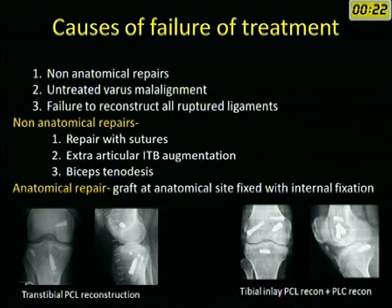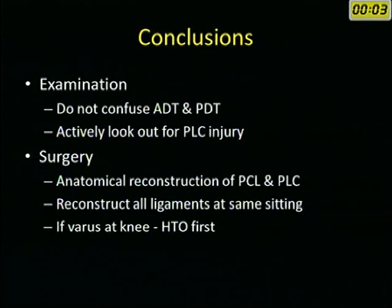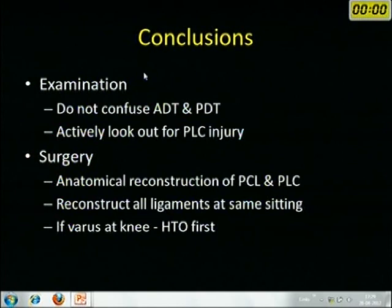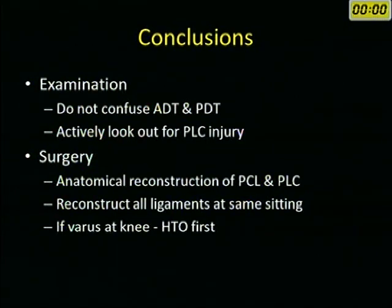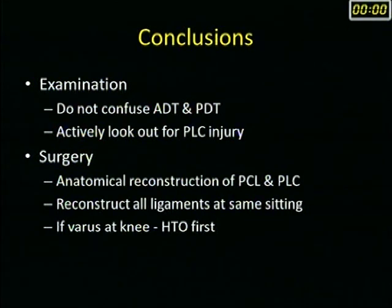Anatomical repair means placing the graft at the anatomical site fixed with internal fixation devices. In conclusion: when examining the knee, do not confuse the anterior drawer test with the posterior drawer test — identify the posterior sag first. Once one ligament injury is diagnosed, actively look for other injuries, particularly posterolateral corner injuries. During surgery, perform anatomical reconstruction at anatomical positions, and reconstruct all ligaments at the same sitting. If there is varus at the knee, do HTO first.